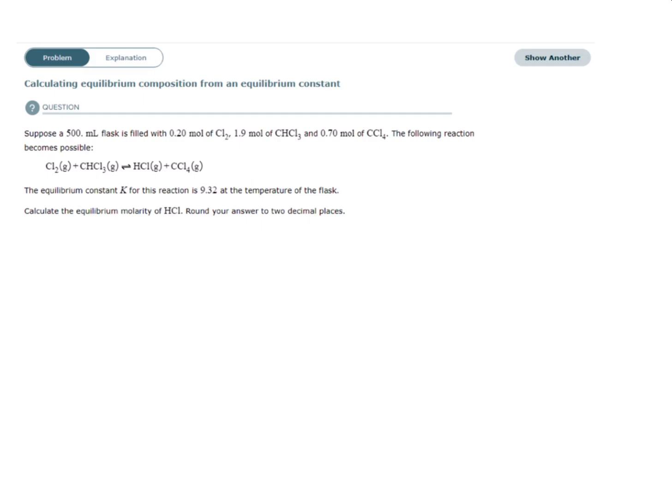In this example, suppose a 500 milliliter flask is filled with 0.2 moles of Cl2, 1.9 moles of CHCl3, and 0.7 moles of CCl4. They've given us a balanced reaction and an equilibrium constant of 9.32, and they want us to calculate the equilibrium molarity of HCl, rounding our answer to two decimal places.